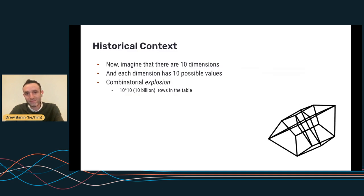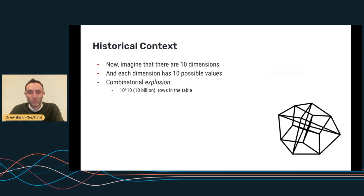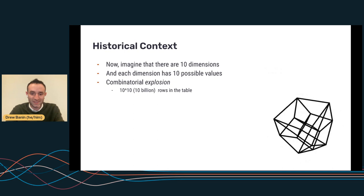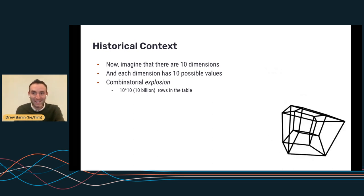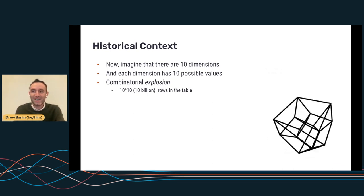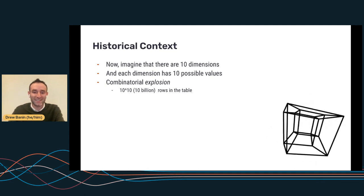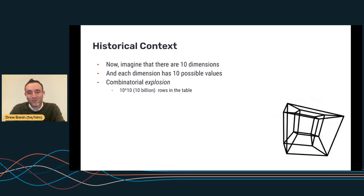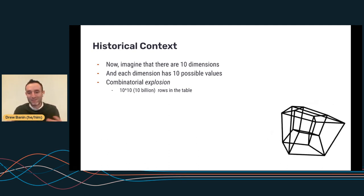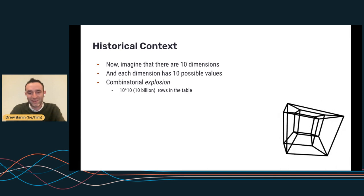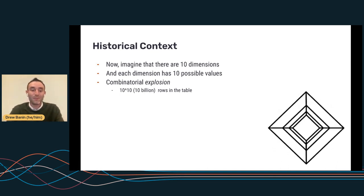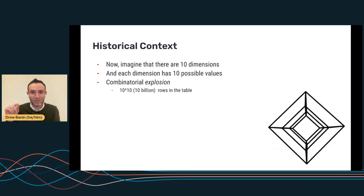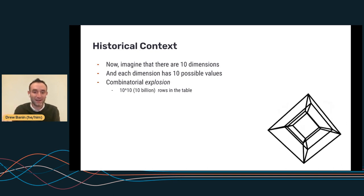But imagine less of a toy example in which there are 10 dimensions and 10 possible values, which is not many for this cube. You get this combinatorial explosion in the number of rows in this table. So you get 10 to the 10th or like 10 billion rows on this table. Most of the rows in this table are a combination of dimensions that you would never care to query. It's not useful. No one's going to look at them, but you must calculate the cube at the smallest grain that you would imagine anyone would want to explore the data on. So you have no choice, but to calculate upfront, the metric values for all of these combinations of dimensions.